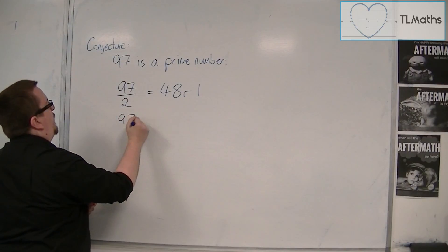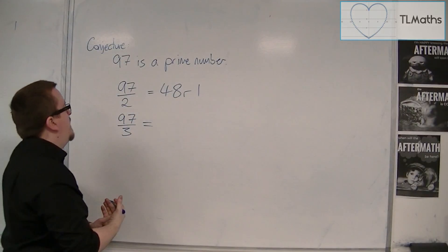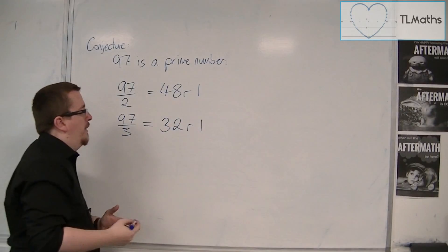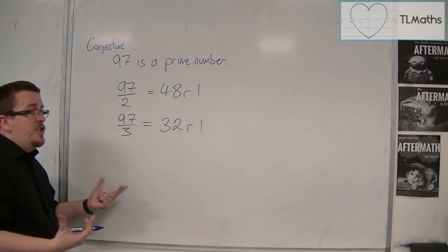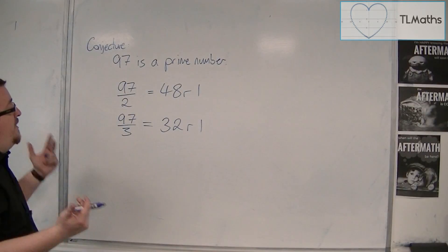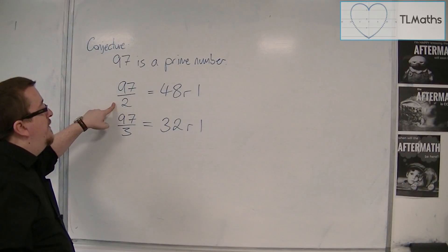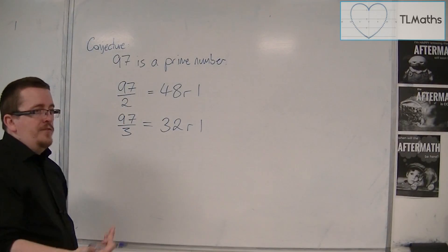Then we try 97 divided by 3. So 97 divided by 3 is 32 remainder 1. So 3 doesn't work either. 3 is not a factor. Now, would I try dividing by 4? Well, the answer is no. I wouldn't try dividing by 4. Because if 2 didn't work, then 4 definitely won't work. So I wouldn't bother dividing by 4.